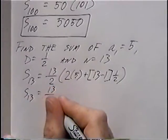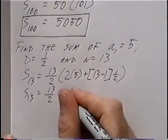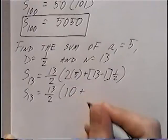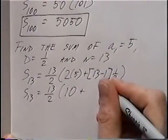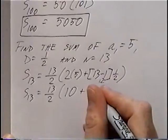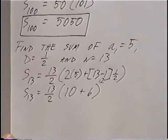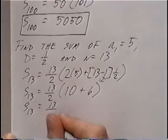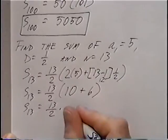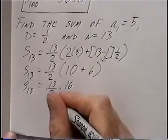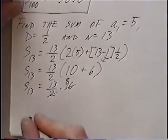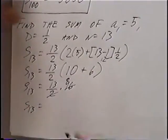Solving: 13 over 2 stays the same. Inside the parentheses, 2 times 5 is 10, plus 13 minus 1 which is 12, and half of 12 is 6, giving 16. So we have 13 over 2 times 16. We can simplify: 16 divided by 2 is 8, and 13 times 8 equals 104.